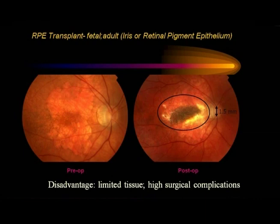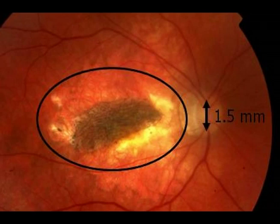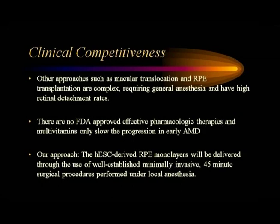What about taking cells from elsewhere in the eye — from the iris or even the periphery of your retina — and moving them to the central area? You can only get very limited tissue this way, and because you're cutting the eye in other places, the surgical complications are too great and the procedure is very long. Also, there are no FDA-approved pharmacological therapies — you can't rescue these retinal pigment epithelium cells by taking a pill or injection. So let's look at what this surgical procedure using embryonic stem cells would be like.